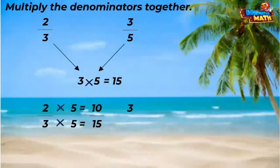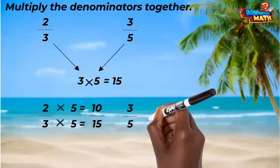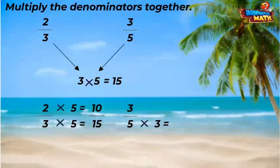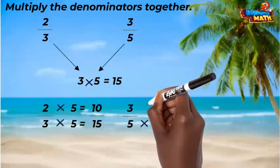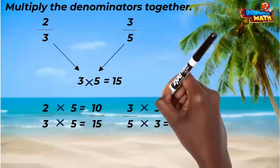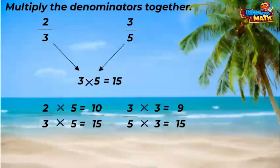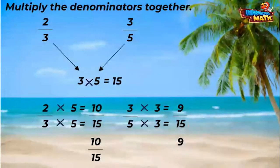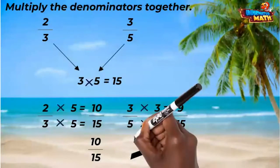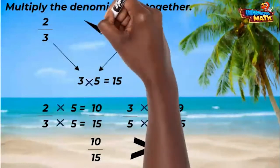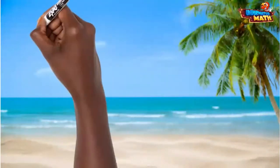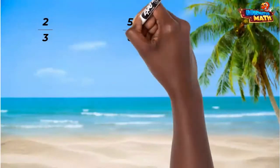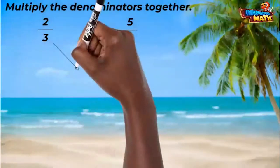Three-fifths is equivalent to nine-fifteenths. Now we can easily compare ten-fifteenths to nine-fifteenths and see that ten-fifteenths is larger. Therefore, two-thirds is greater than three-fifths.